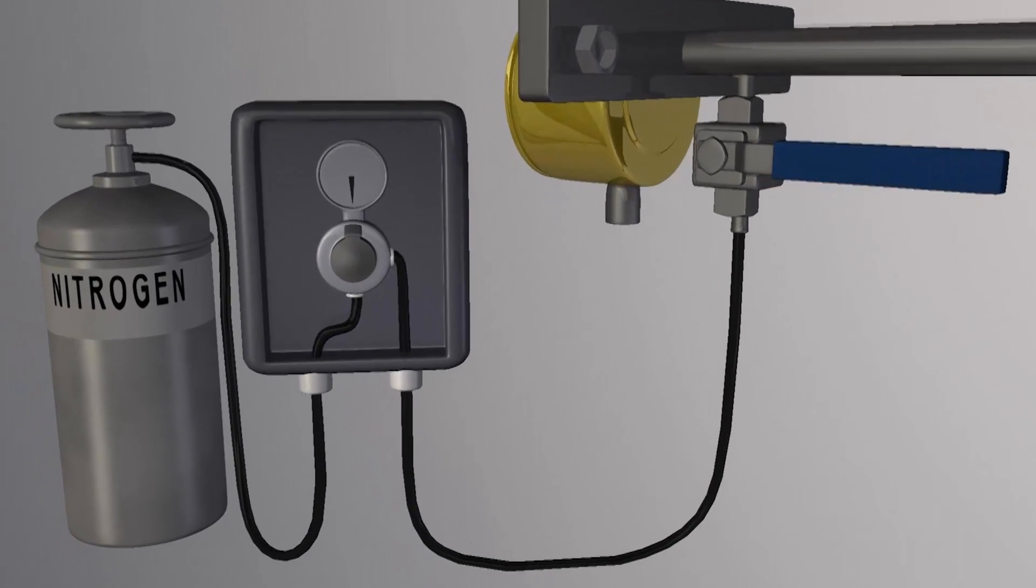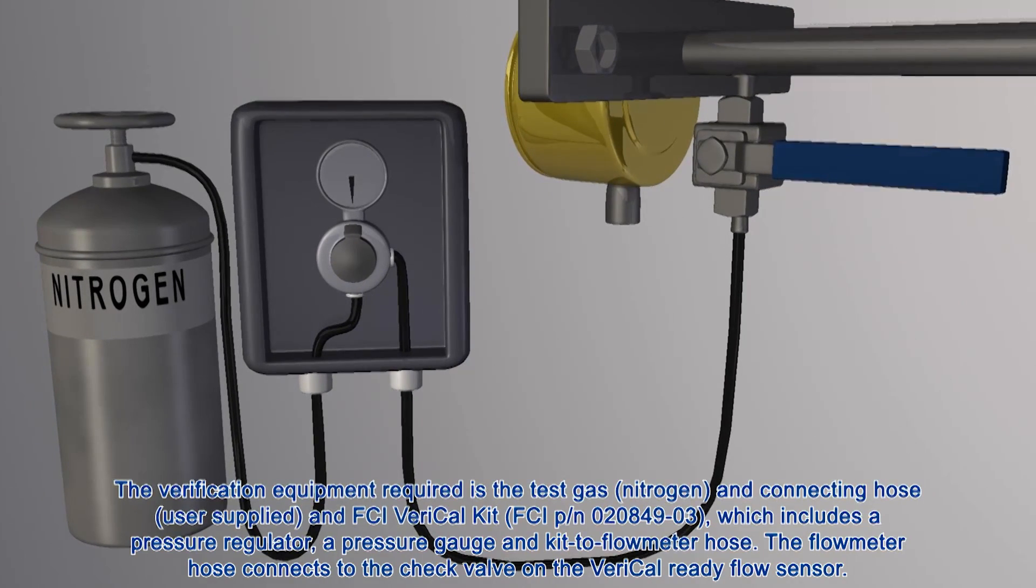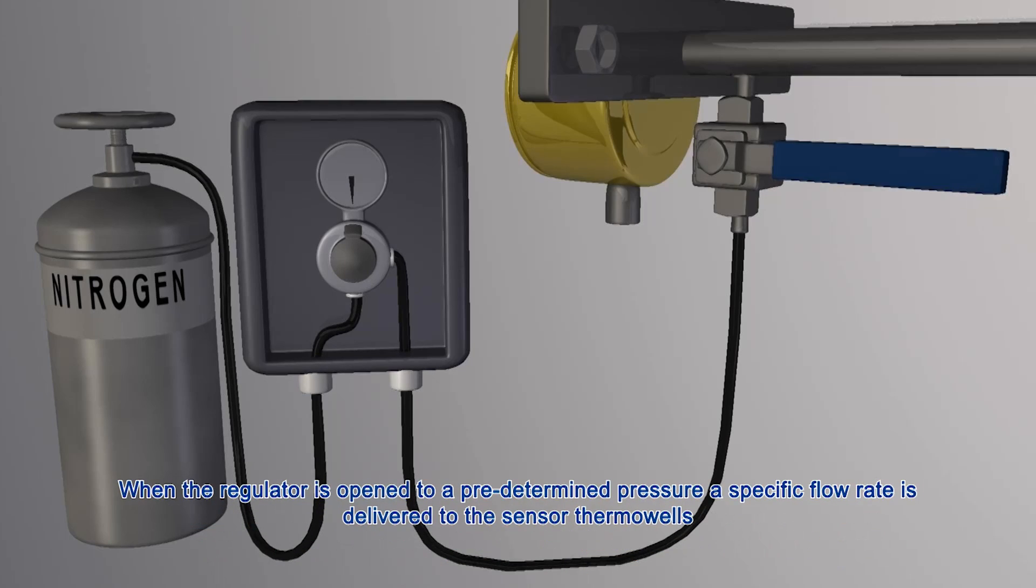The verification equipment required is the test gas, nitrogen, and the connecting hose, which is user supplied, and FCI's Vari-Cal kit. The kit includes a pressure regulator, a digital pressure display, and a hose connecting the meter to the Vari-Cal kit.